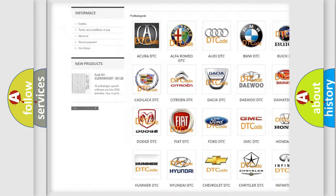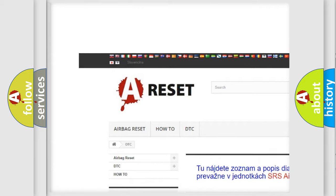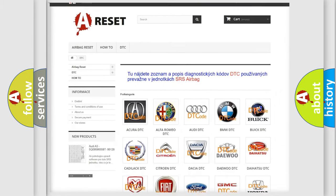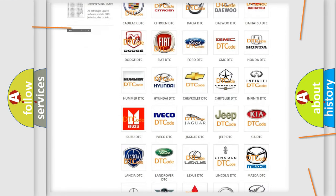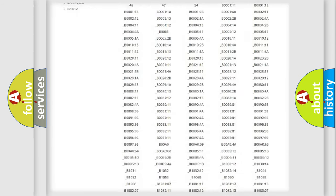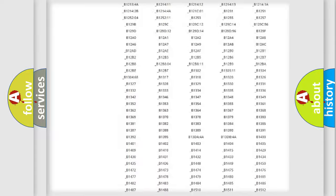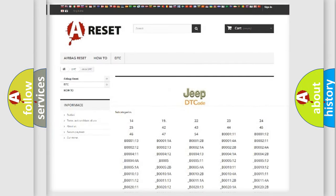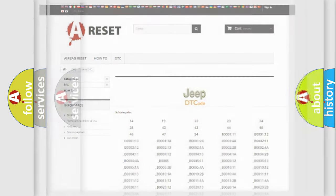Our website airbagreset.sk produces useful videos for you. You do not have to go through the OBD2 protocol anymore to know how to troubleshoot any car breakdown. You will find all the diagnostic codes that can be diagnosed in Jeep vehicles, and many other useful things.